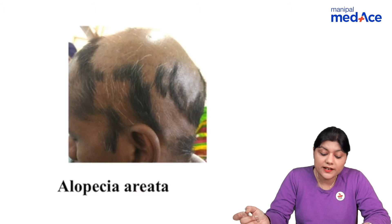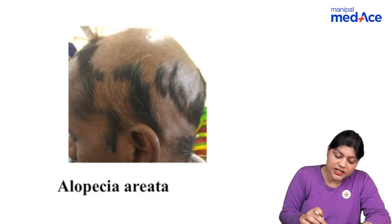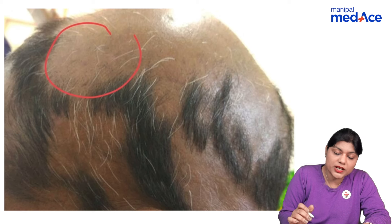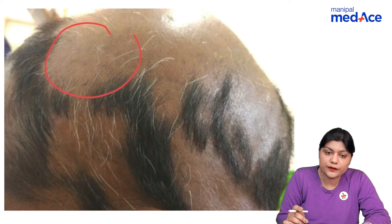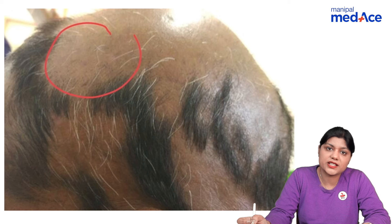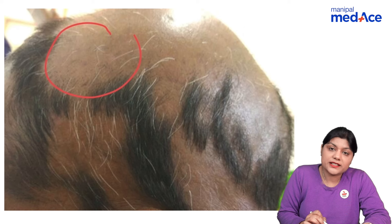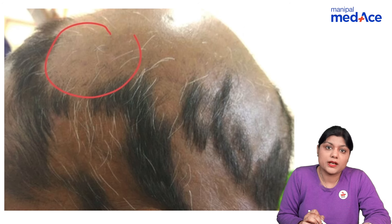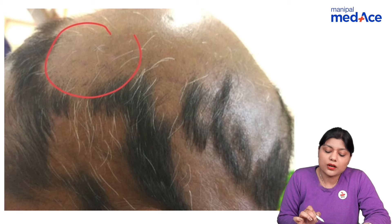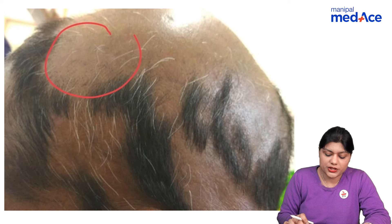Then we have alopecia areata — non-scarring alopecia with sparing of the white hair. This is because the antigen is directed against the melanin present in the hair bulb. The hair bulge is spared, which is why it results in non-scarring alopecia.